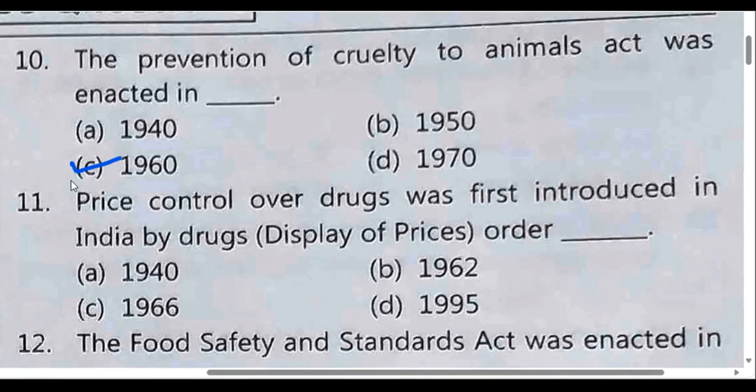Price control over drugs was first introduced in India by the Drug Price Control Order. Option B: 1962.